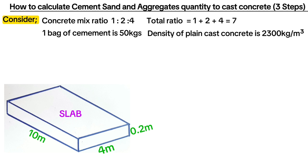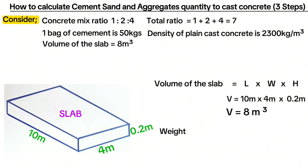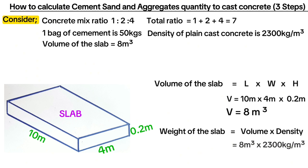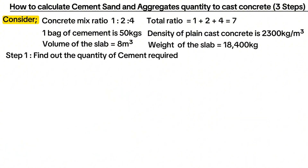The slab is 10 meters along its length, 4 meters along the width, and 200 millimeters slab depth. The volume is equal to length multiplied by width multiplied by height, which gives us 8 cubic meters. The total weight for the slab is equal to volume multiplied by density, which gives us 18,400 kilograms.